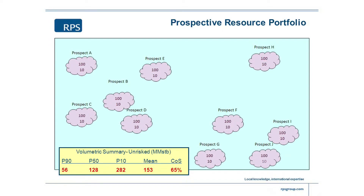That means the chance of finding at least one oil and gas field — we could find two, three, or even be really lucky and find four, five, six, seven, eight, even ten. The chance of finding ten, of course, is incredibly small — in this particular case it would be 10% to the power of ten, so it's probably almost too small to write on the screen.